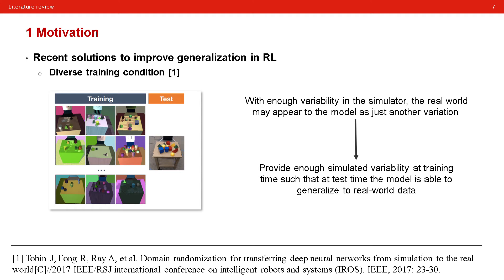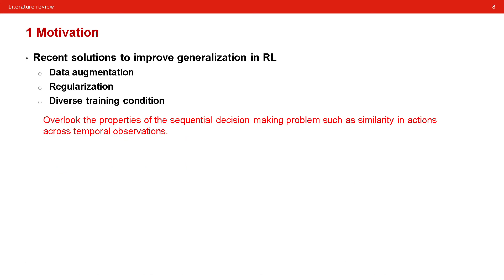In other words, we increase the size and the diversity of the training set, just like in the supervised learning task. But the endeavor to deal with the training platform will be much heavier for the reinforcement task. However, these methods do not take into account the sequential nature of the reinforcement learning. They overlook the properties of the sequential decision-making problem, such as the similarity in actions across temporal observations.